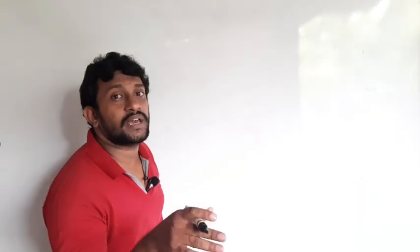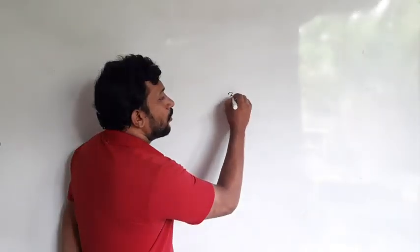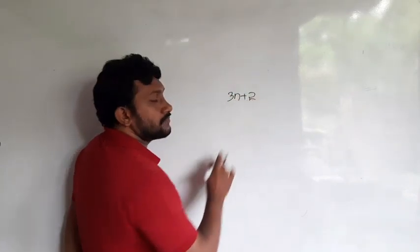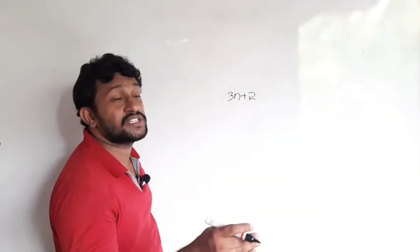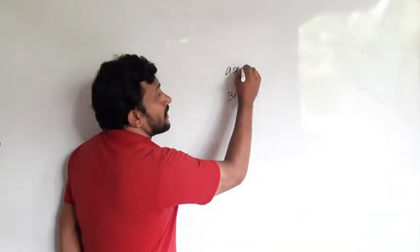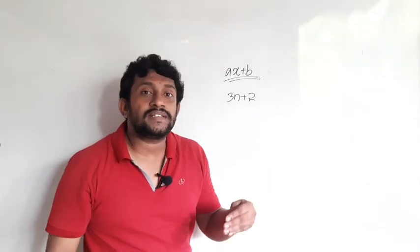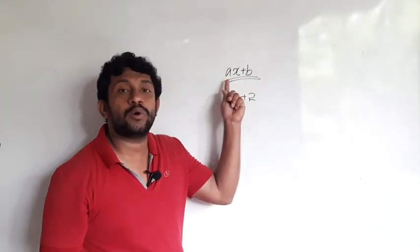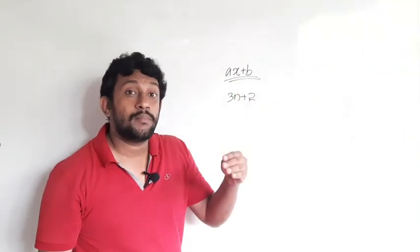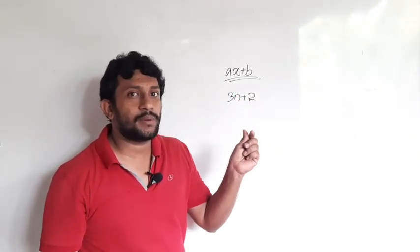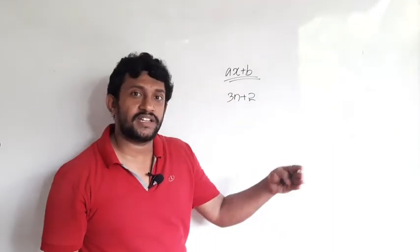It is a first-degree equation. If you are talking about the first-degree equation or the third-degree equation, we have a separate video of this one. If you have an arithmetic sequence, you can use an arithmetic sequence like this: 3n plus 8. It's an arithmetic sequence that you will have: ax plus b. We can learn from first degree, second degree, third degree.